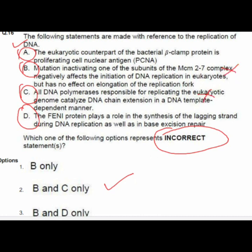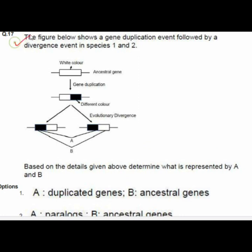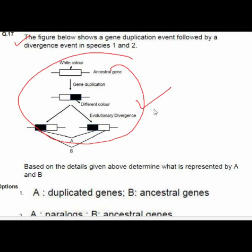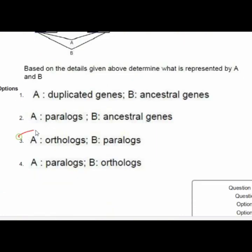Question 17 shows a figure depicting a gene duplication event followed by divergence in species 1 and 2. Option 3 is the correct answer: A is an ortholog and B is a paralog.